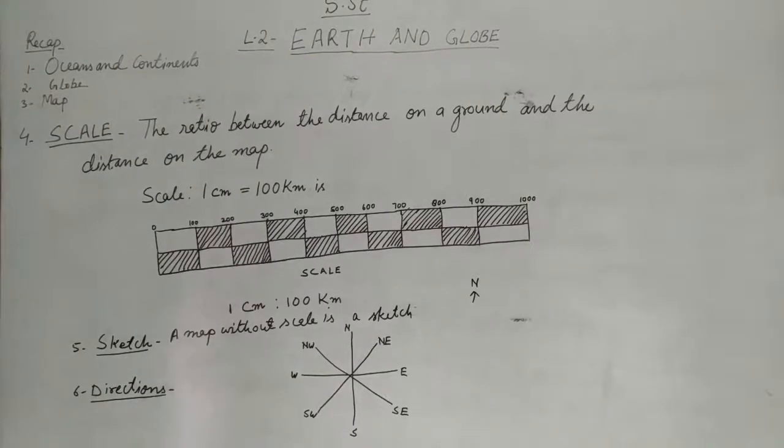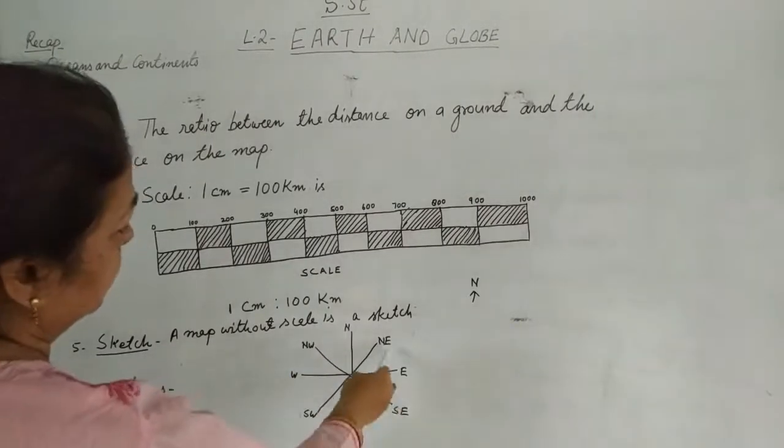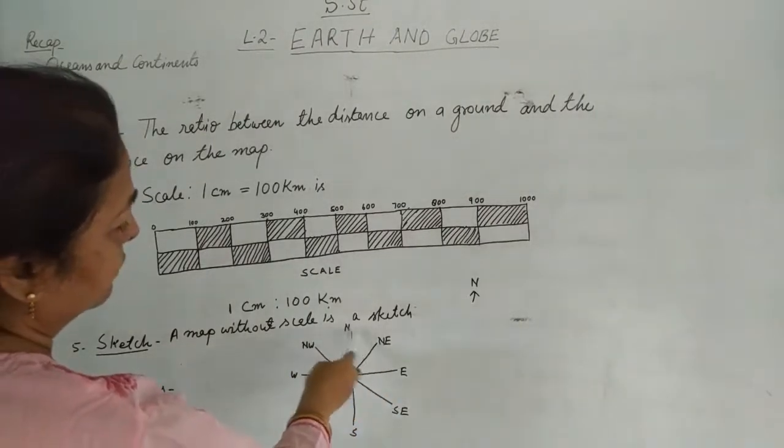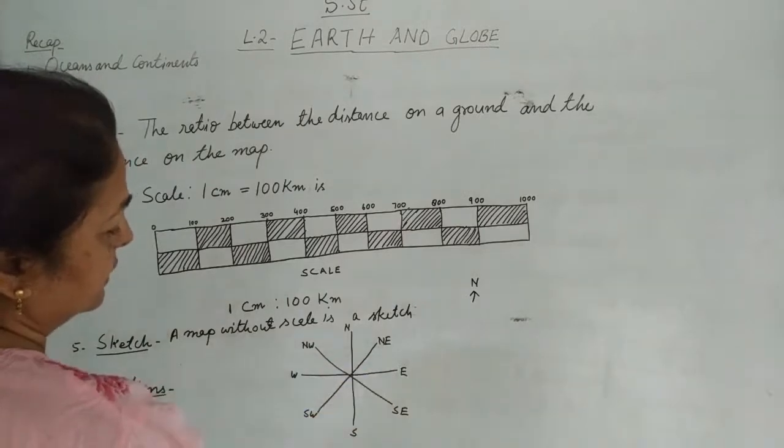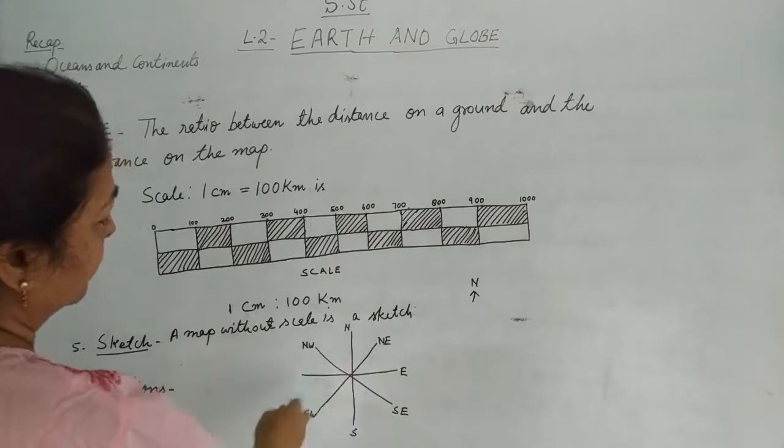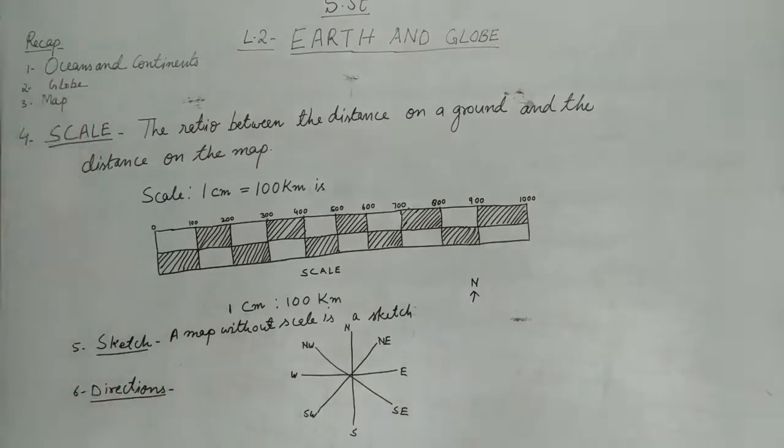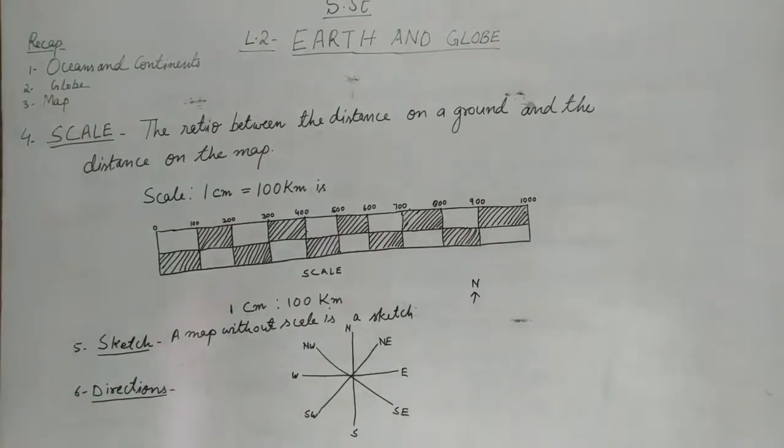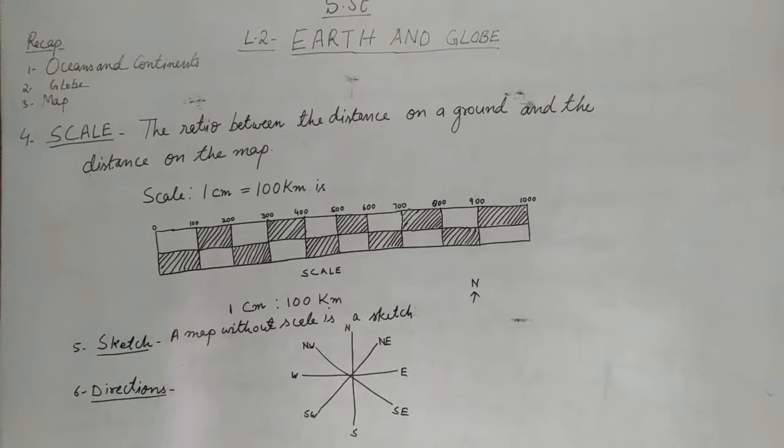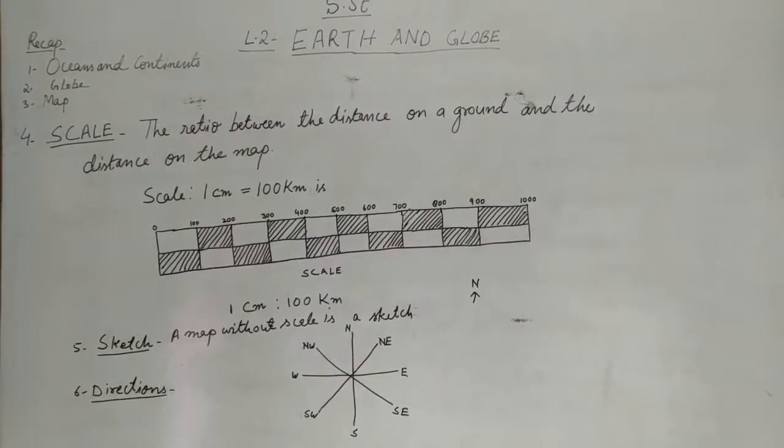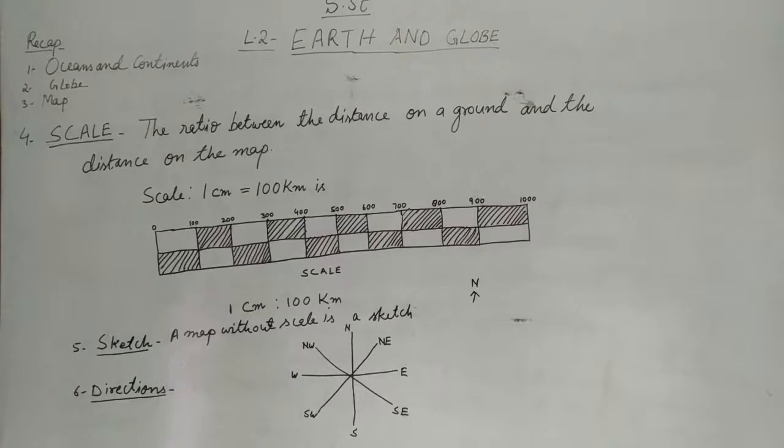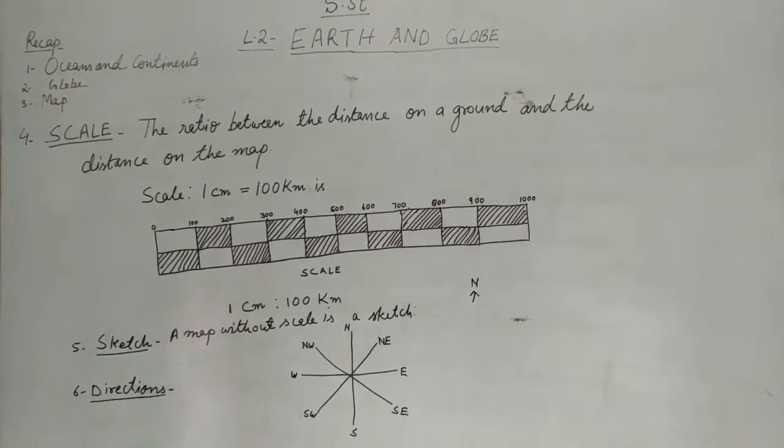The direction that is between north and east, between north and east, that is northeast. The direction that is between north and east is northeast. Likewise, direction between north and west is northwest, and between south and east is southeast, and between south and west is southwest.